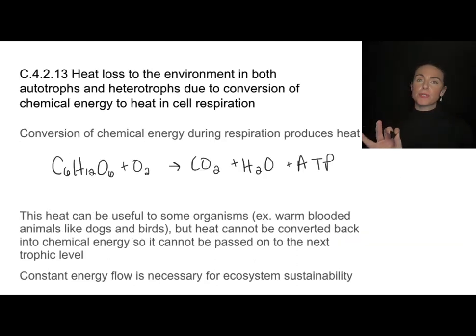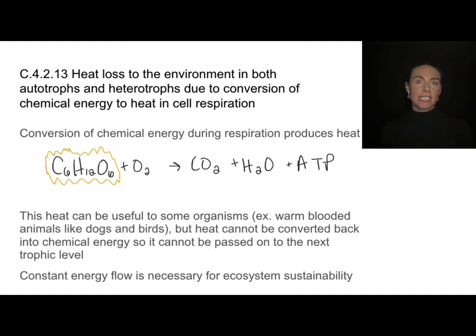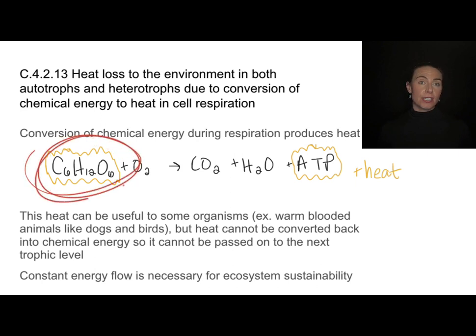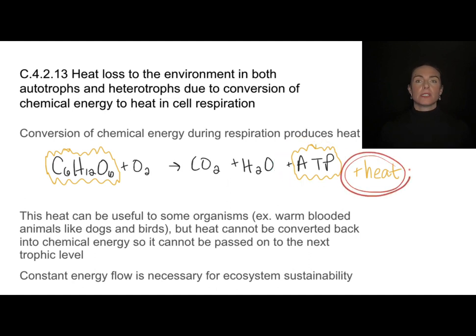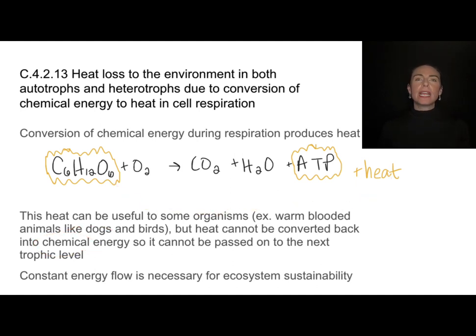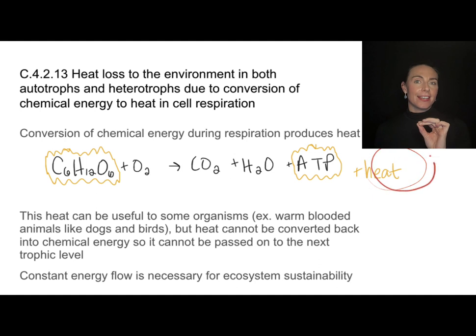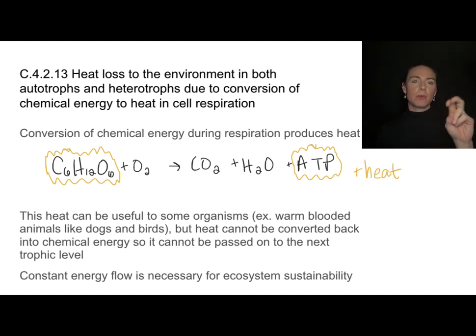The goal of cell respiration is to take the chemical energy in glucose and convert it into chemical energy in the bonds of ATP. But we're quite inefficient — this process also produces quite a bit of heat energy, so not all of the energy in glucose gets converted into ATP. You can use that heat to maintain body temperature, but you cannot convert that heat back into chemical energy or use it to build biomass. Therefore, it cannot be passed on to the next trophic level.